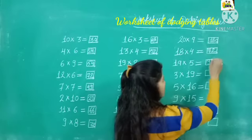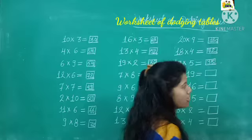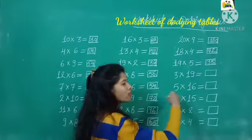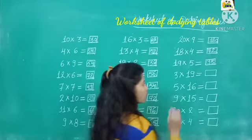3 nineteens are. Ab dekhiye, 3 ko bhi 19 se multiply kar sakte hain. 19 threes are kya likha hai. Or 3 nineteens are kya hoga? 19 threes are 57.